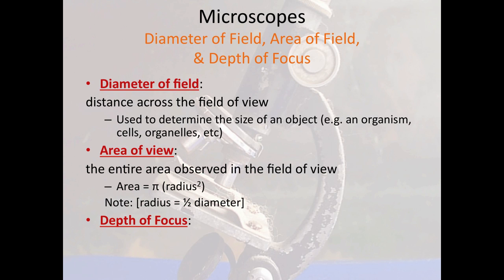The area of view is calculated in part using the diameter of field — it's knowing the entire area of that circle you're looking at. Sometimes you may want to know how many cells or organisms are in an area of view, such as how many cancer cells are visible in a certain area or how many malaria organisms are visible in a field of view.